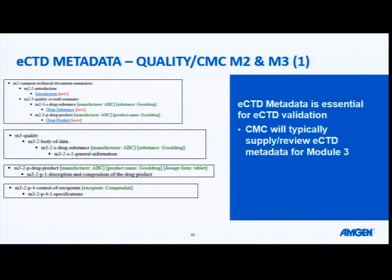There's quite a lot of metadata in the quality section — that's the module 2 and module 3 section. It's generally identifying your drug substance and your drug product. It is possible sometimes to have a dossier that has two drug products. This helps the evaluator to see that there's going to be two separate arms of your 3.2.P — one for each drug product. And that allows you to group your CTD information to each of those drug product sections, and allows the evaluator and yourselves to make sure that you are life-cycling and updating the appropriate content to the appropriate drug product.